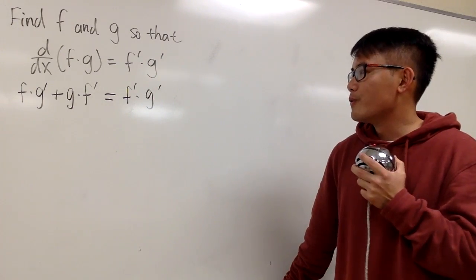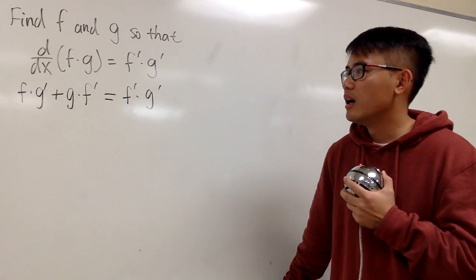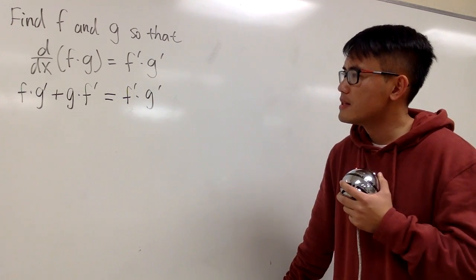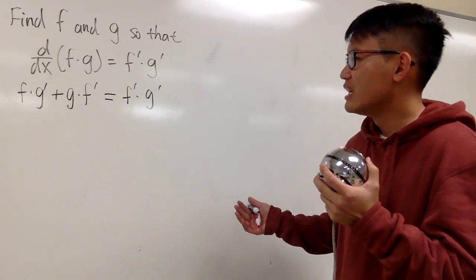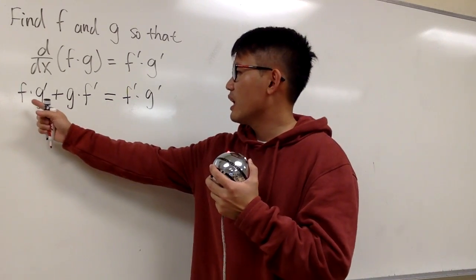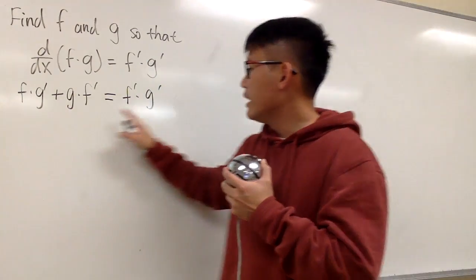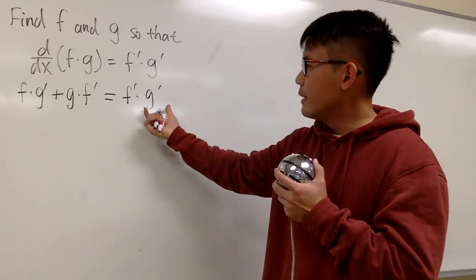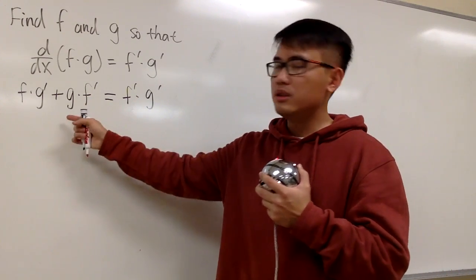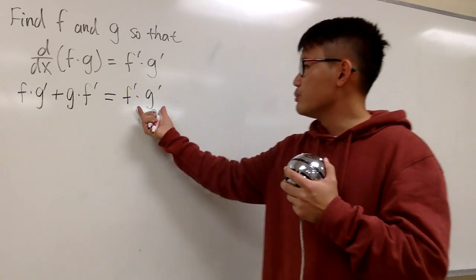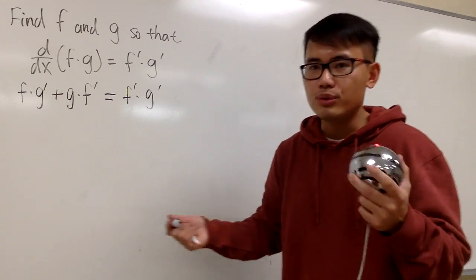We have four things here: the original f, the original g, f prime, and g prime. Let's try to isolate something. On the left hand side we have f times g prime, and on the right hand side we also have g prime. If I move that term to the left hand side, I can factor out g prime. It's symmetrical, so you can do it either way.